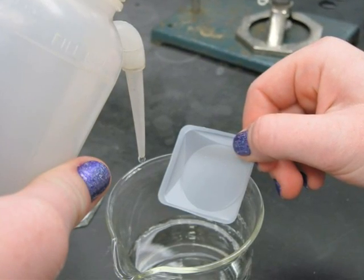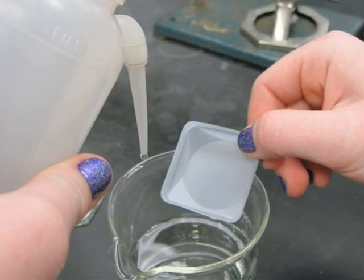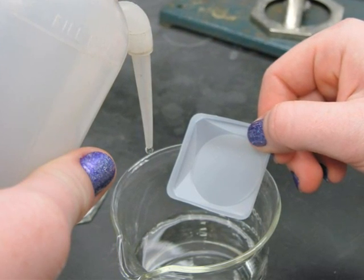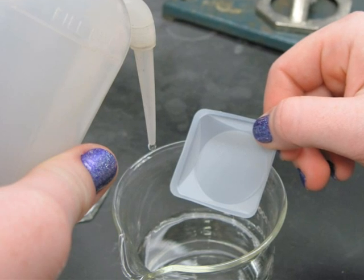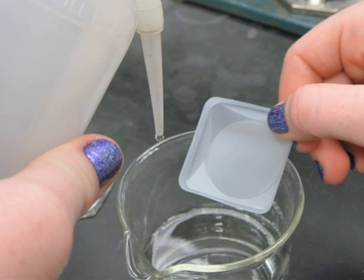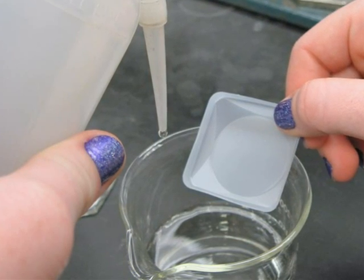Quantitatively transfer the sample to a 250 milliliter beaker. Use a wash bottle to ensure the complete transfer of the sample. Add approximately 150 milliliters of distilled water and 1 milliliter of 6 molar nitric acid to the beaker.